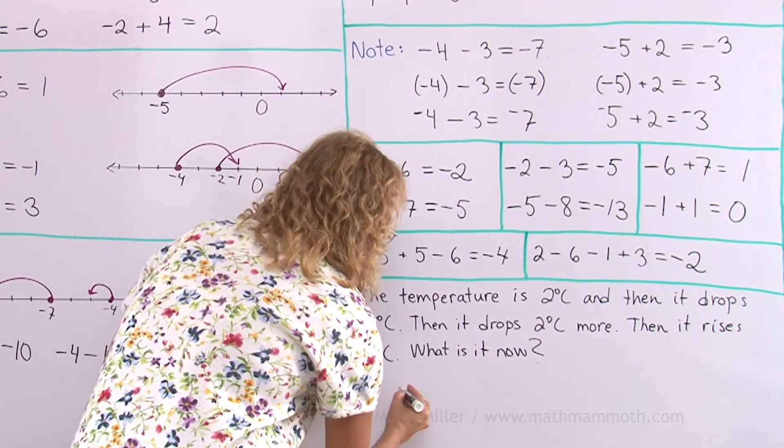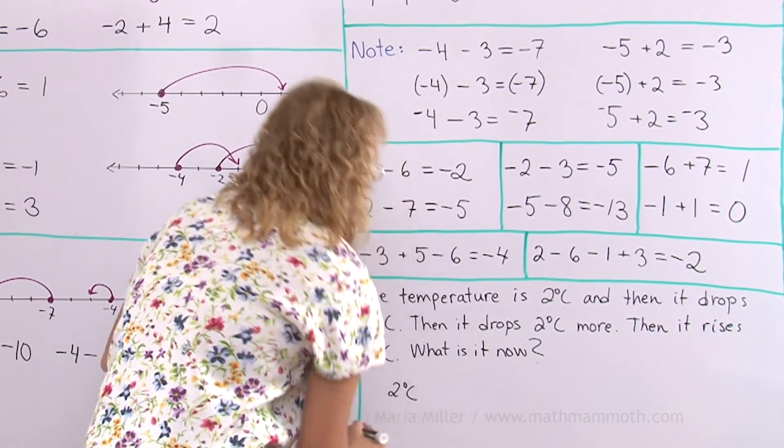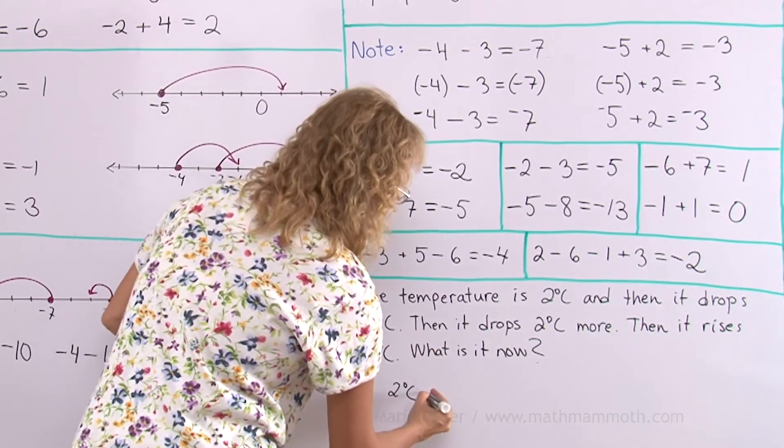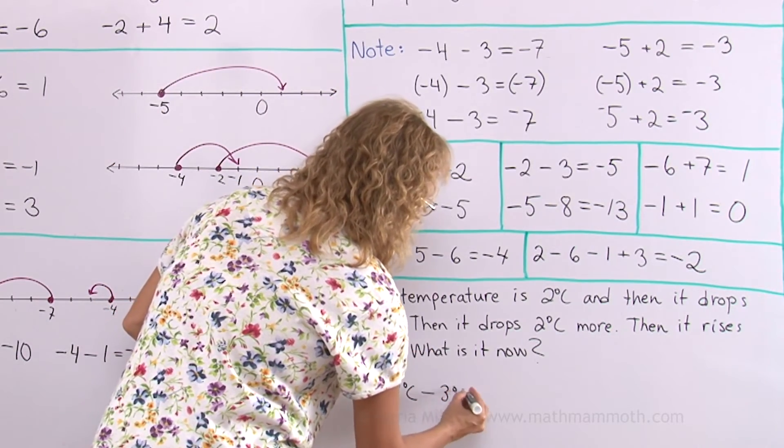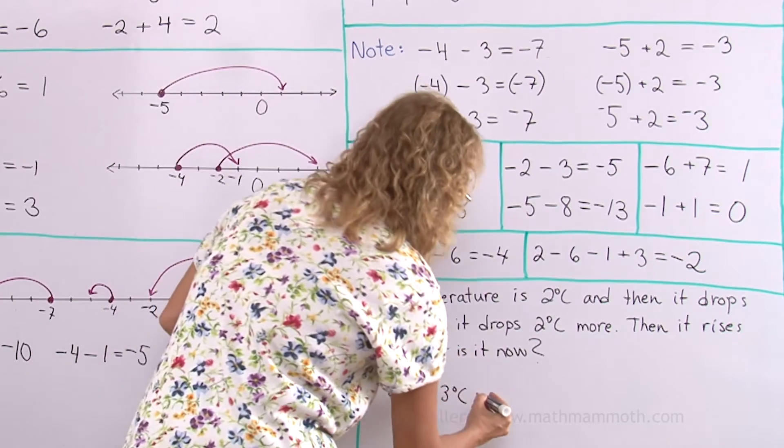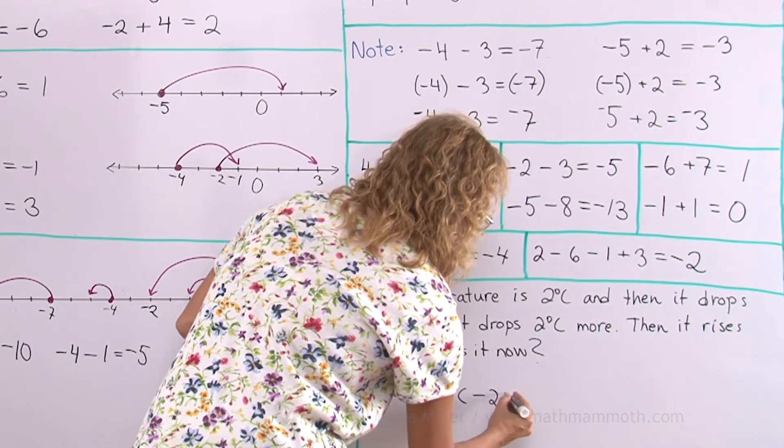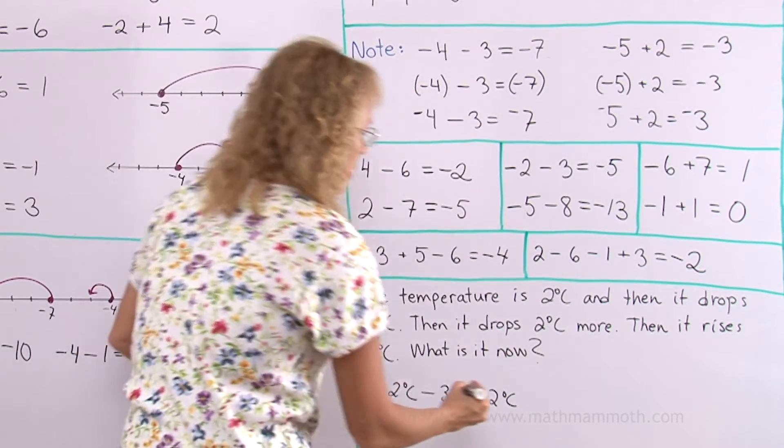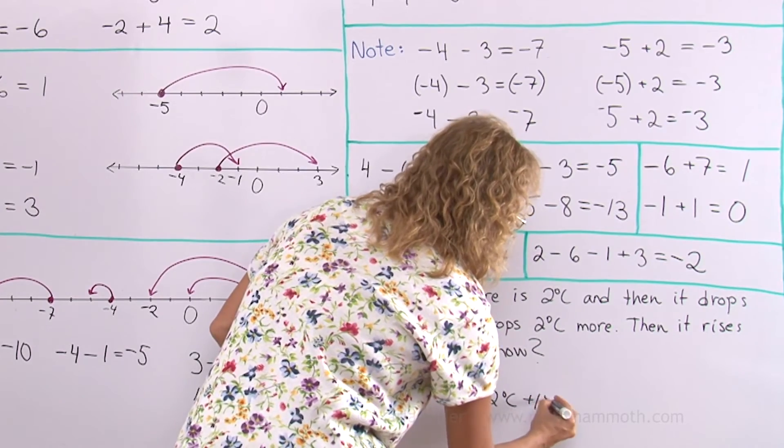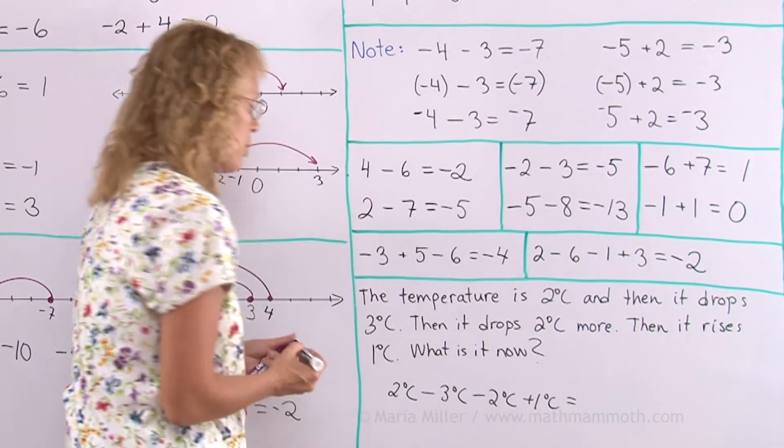Our starting point is of course 2. And then it drops. So we subtract 3. And then it drops 2 more. So we subtract 2 more. And then it rises 1. So we add 1. So what would be the result?